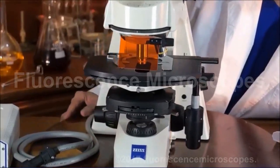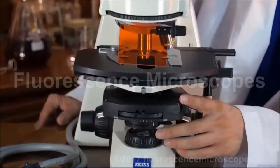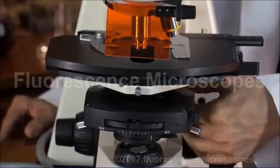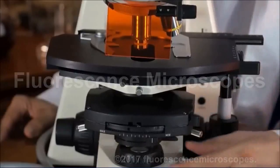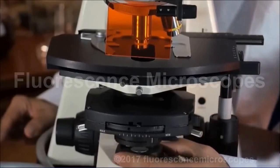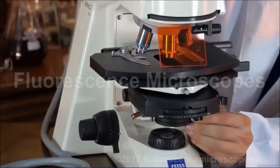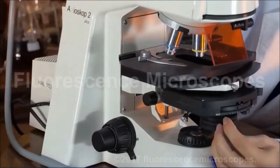Now we've got a universal condenser. This condenser, here's the rack and pinion for it. You've got a field iris diaphragm. This is what you're going to use for setting your Köhler. You've got filter holders on the bottom.